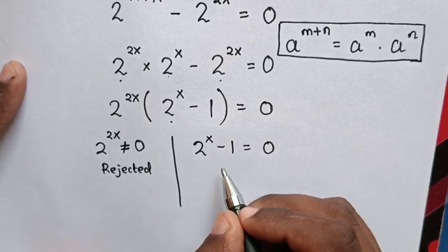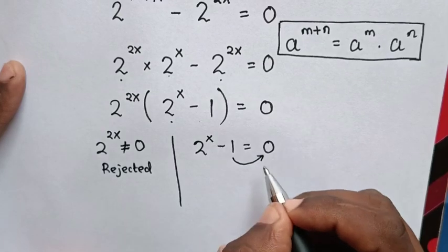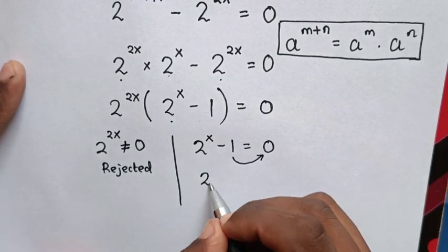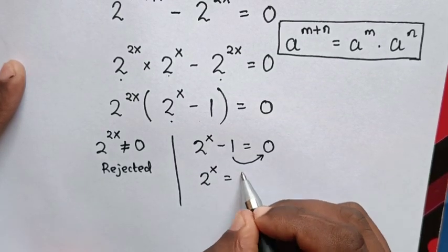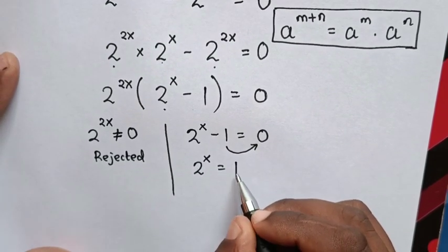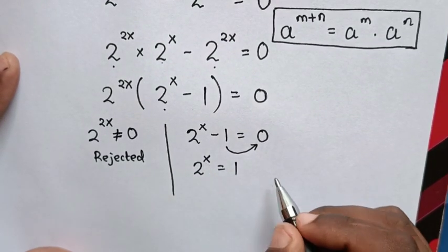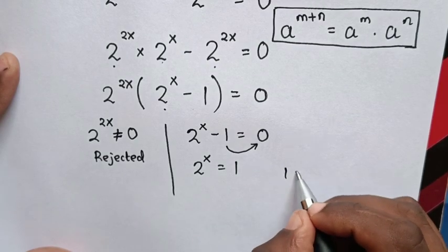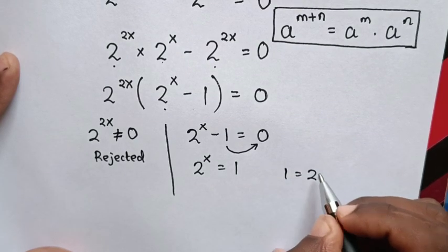But in this case, we take negative 1 to the right side, so 2^x = 1. Then to have the same base of 2, 1 equals 2^0.